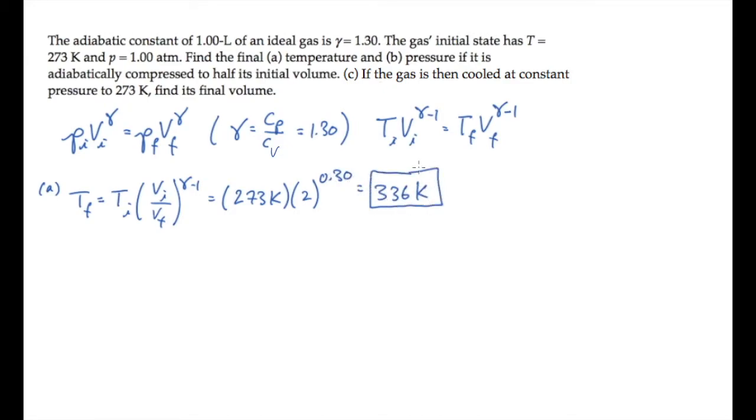Part B asks us to find the final pressure after the compression. That equals the initial pressure times the ratio of the volumes to the gamma power, and substituting values shows us that it increases by a factor of 2.46.